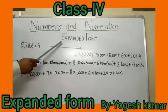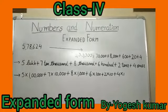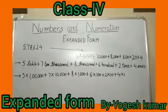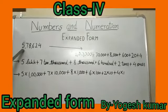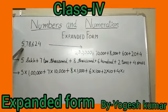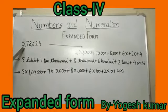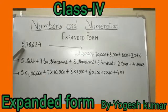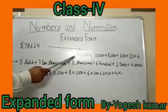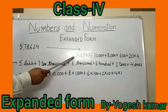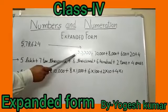This is my second video on expanded form. There are three ways to write expanded form. We have to write the expanded form of 578624. We can write it as like this. We have discussed in my previous video.